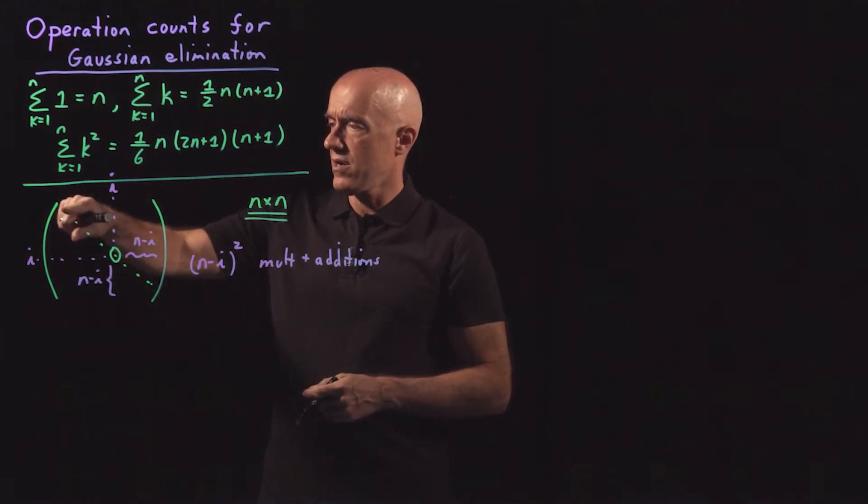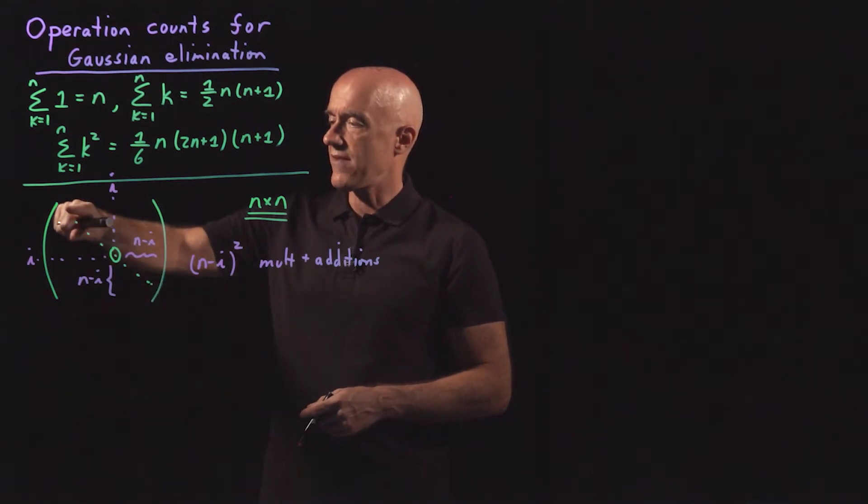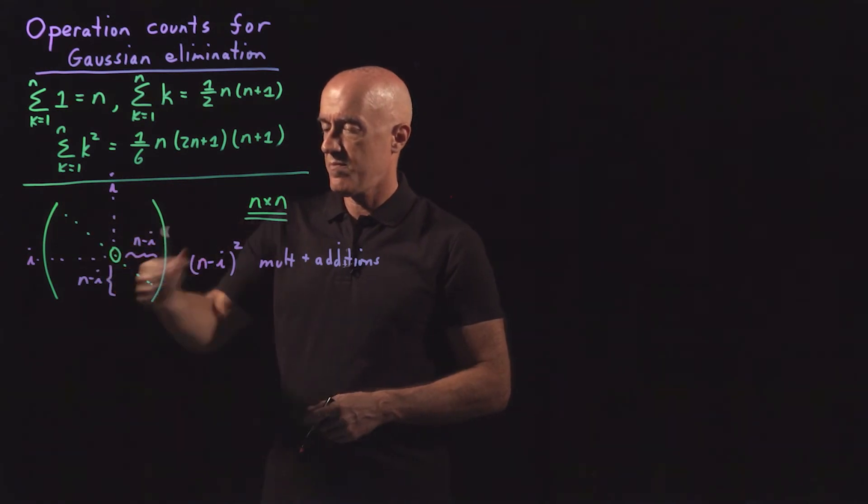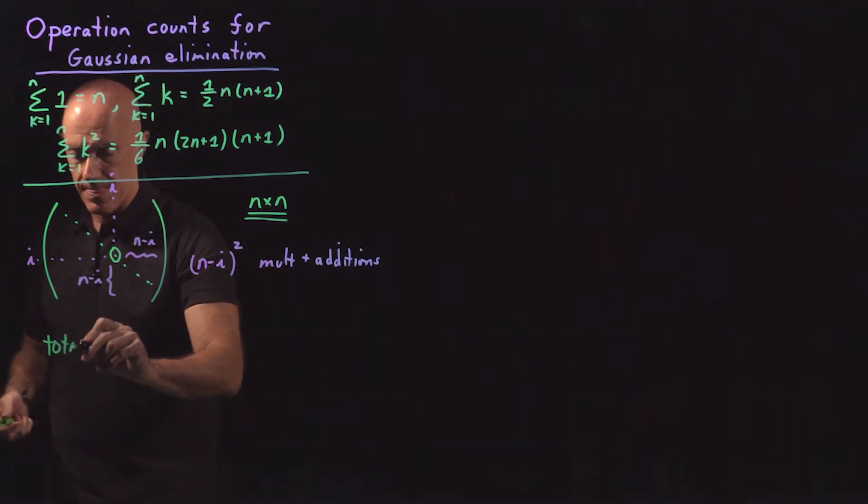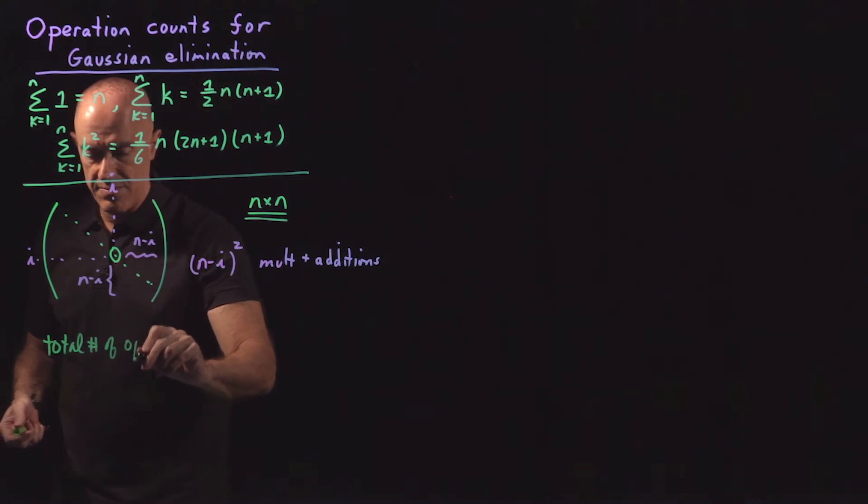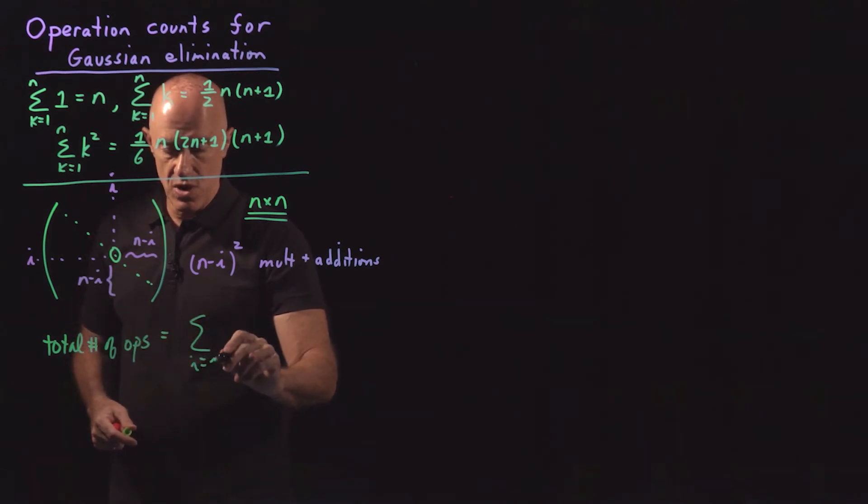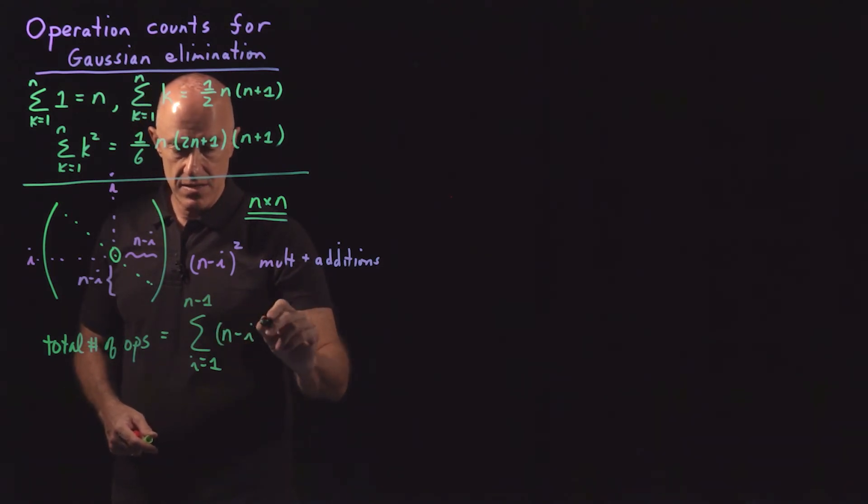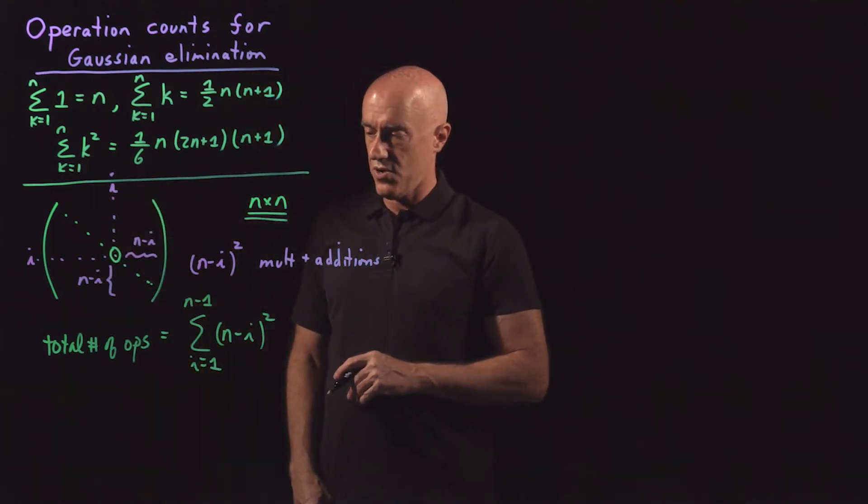So that's finding the constant from the pivot, multiplying by the constant, adding it to the row underneath. Finding the other constant, multiplying everything by that constant, adding it to the row underneath. So we have basically (n-i)² multiplications and additions. But we have to do that for all the pivots. We have to do that for the first pivot, the second pivot, all the way down to almost the bottom. The last row we don't have to do that for. So we can write the total number of operations, that means additions and multiplications, is equal to the sum from i equals 1 to n minus 1 of (n-i)².